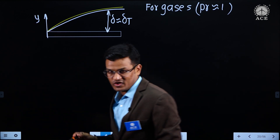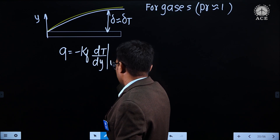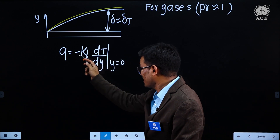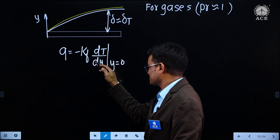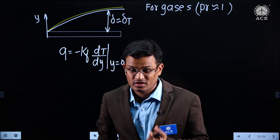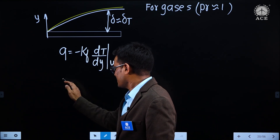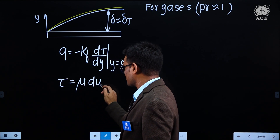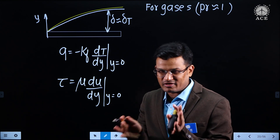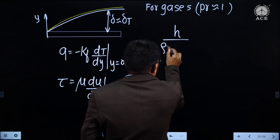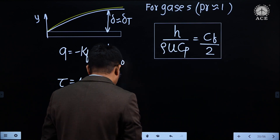If you take y as the coordinate, in heat transfer the heat flux equals minus Kf dT/dy at y=0 at the surface. The minus sign is introduced when along the y direction temperature is decreasing, to make heat flux positive — but this minus sign is not compulsory, it depends on the situation. In fluid mechanics, you use Newton's law of viscosity to find shear stress at the wall. If you equate these two and apply mathematics, you get h / (rho × u × Cp) = Cf / 2. This expression is called Reynolds analogy.